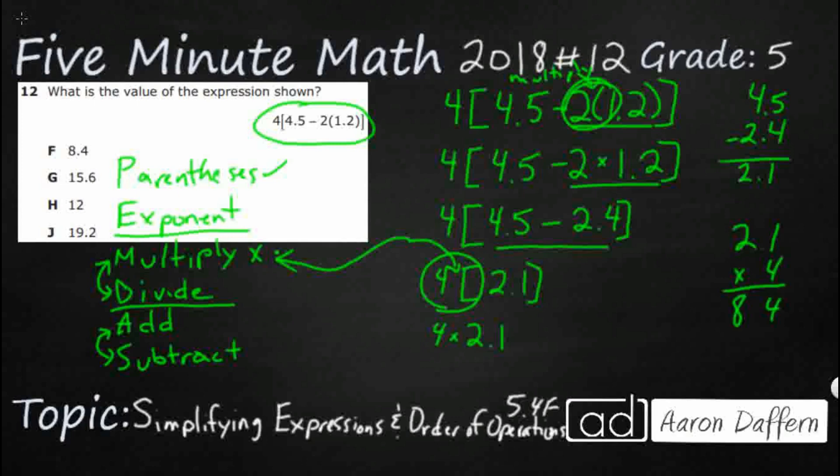I've got 1 digit behind the decimal in my factor, 1 digit behind the decimal in my product, 8.4, or 8 and 4 tenths. So you see our answer here is F.